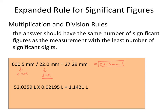The same thing applies to multiplication. In this particular problem we have six sig figs for one measurement. In the other, remember leading zeros are not significant, so there are only four sig figs in this measurement. The least number of sig figs is four, so my final answer has to have four sig figs, and that's going to be equal to 1.142 liters as our final answer.